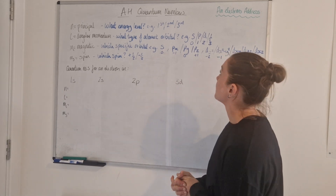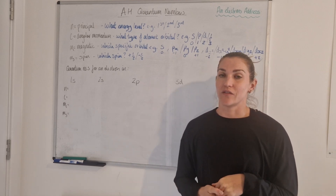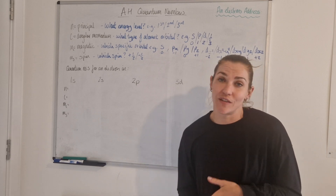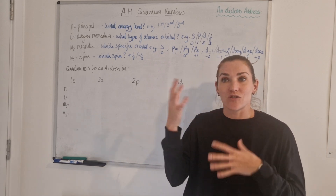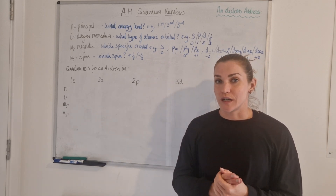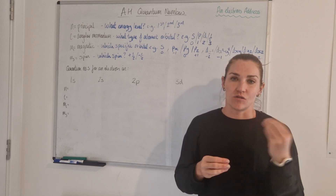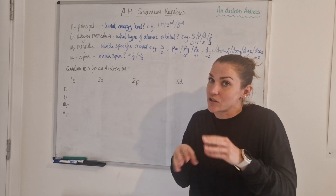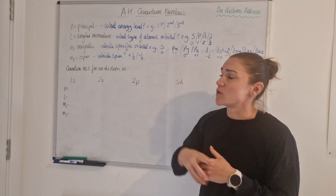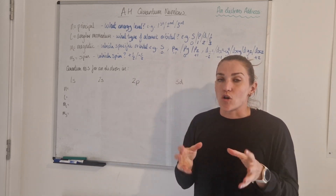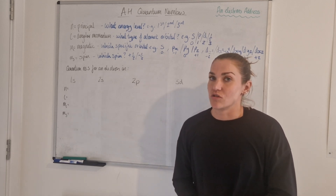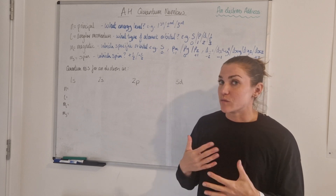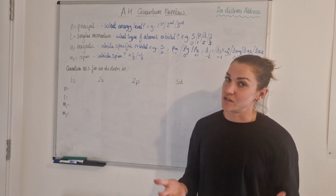Quantum numbers are essentially just ways for chemists to give electrons a number address — so like you have your own address, electrons have their address. All of the quantum numbers are essentially just possible locations that you could find an electron if you were looking for one. That's essentially all you really need to know about what the quantum numbers actually are — they're just addresses.